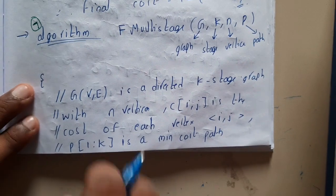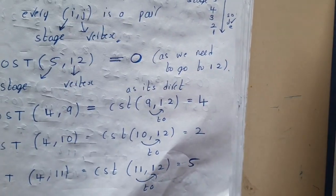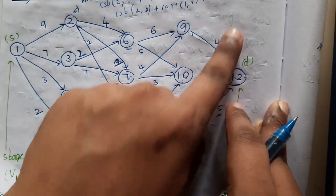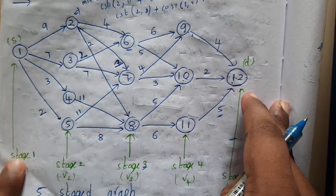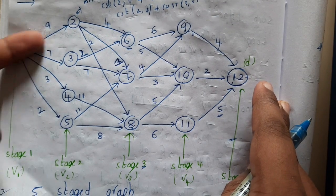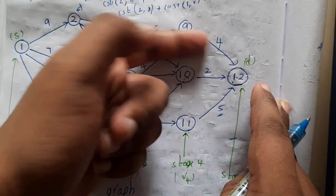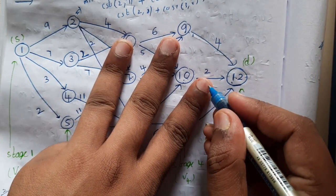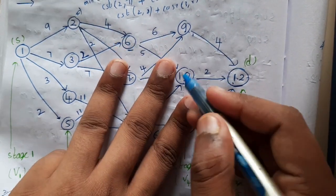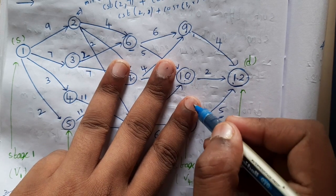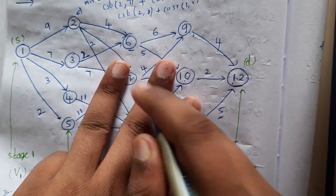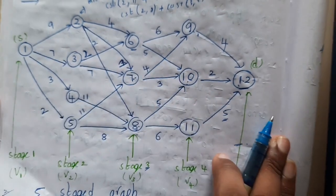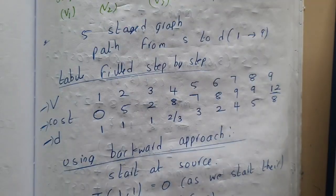Let us first go through the forward approach, then we will go to the backward approach. In the forward approach, you start from the end and compute stage by stage the cost of each and every vertex. After that, you start from the beginning and go through the path which you selected previously. Step one: visit all vertices in the backward direction stage by stage, computing the cost at each vertex. Step two: move forward along the exact path from node 1 onwards.